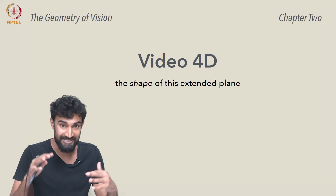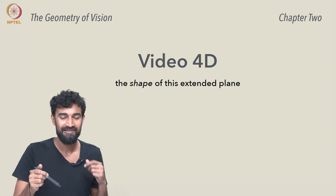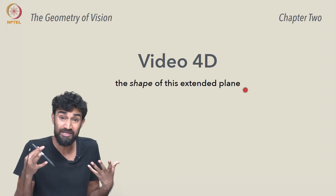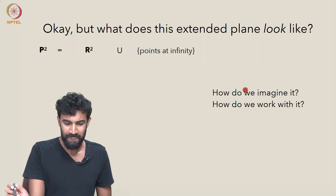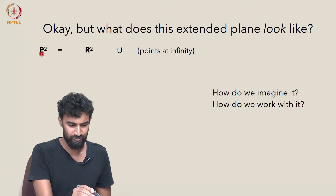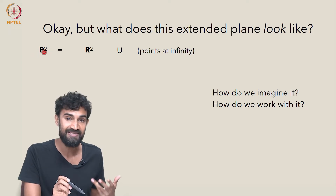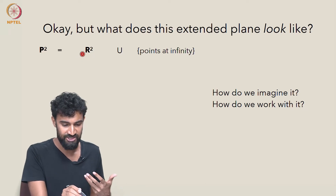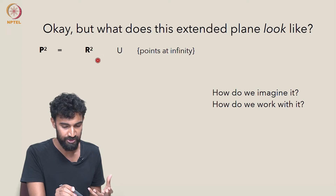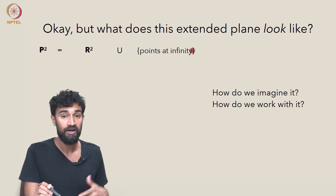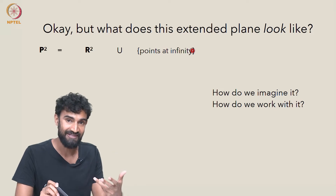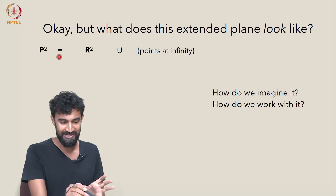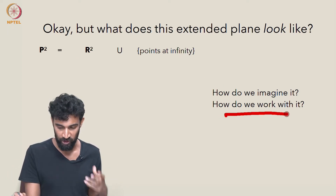Now that we've built this extended Euclidean plane, let's try to take a closer look and understand the shape of it. How does it fit together? What does it look like? P2 is the extended Euclidean plane — as a set of points, it's all the ordinary points in R2 along with all these new points at infinity that we've added, one for each family of parallel lines. But how do we imagine this strange collection of points, and how do we work with it?